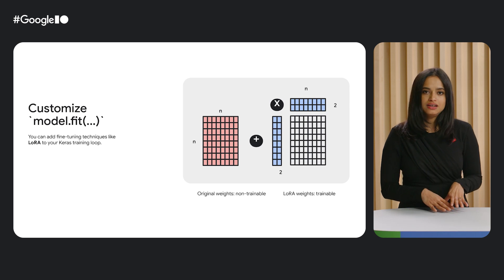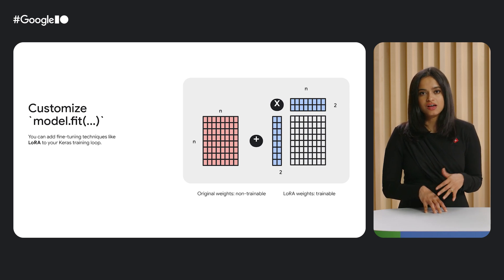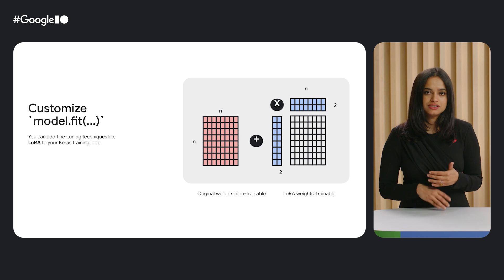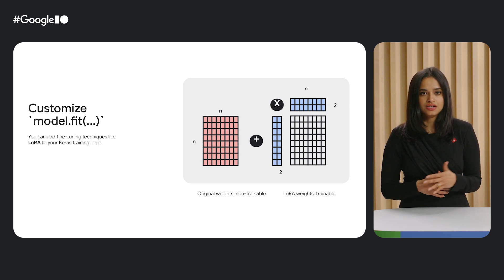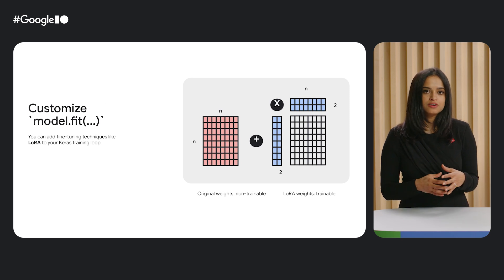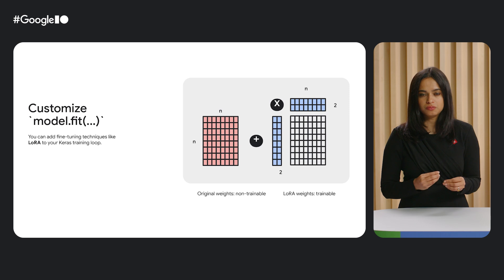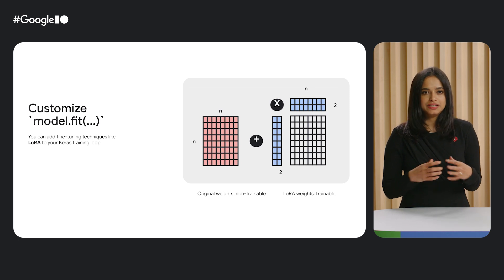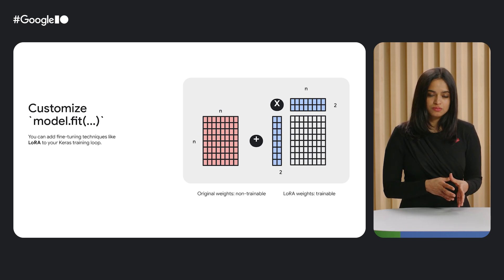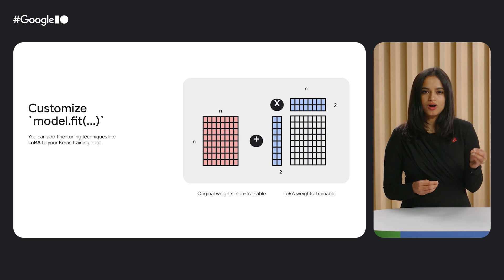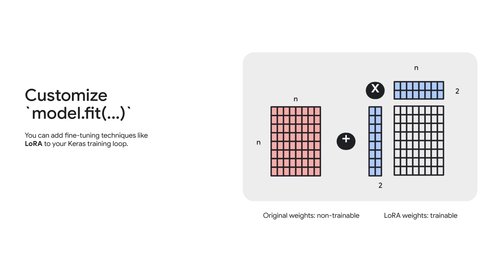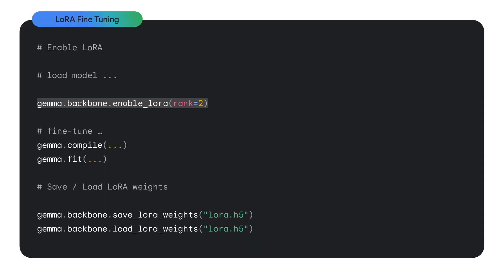We know that fine-tuning large language models can be extremely expensive. One way to make it more efficient is via LoRA, or low rank adaptation. LoRA significantly reduces the number of parameters you need to train. Think of it as training only the essential parts of the model instead of training billions of parameters. LoRA freezes the original model and only trains two smaller matrices. For example, in this picture, I'm using these two matrices of rank two. It's easy to enable LoRA on Keras Hub models — just call enable_lora and specify the rank on the backbone of your Keras Hub model.